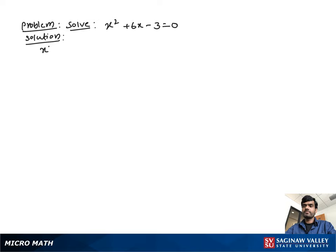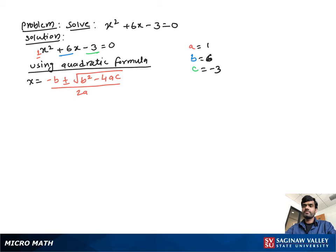Solve x squared plus 6x minus 3 equal to 0. As you see, this is a standard form of a quadratic equation. So determine the values of a, b, and c: a equals 1, b equals 6, and c equals negative 3.